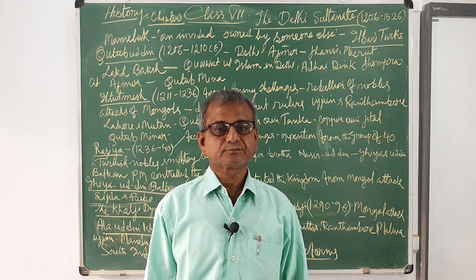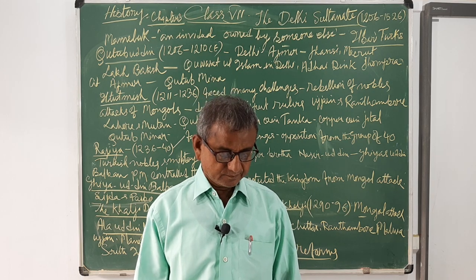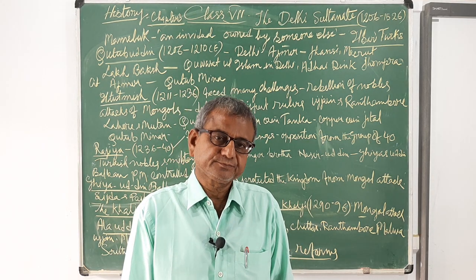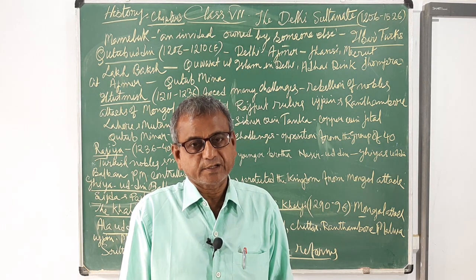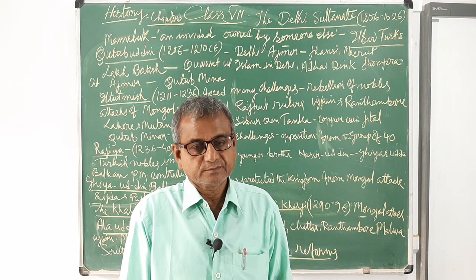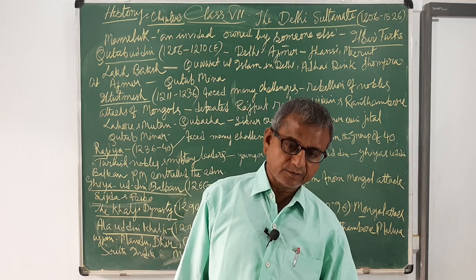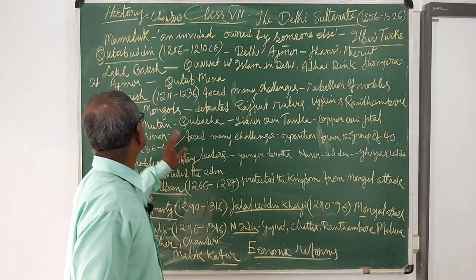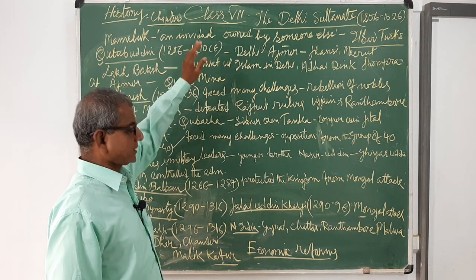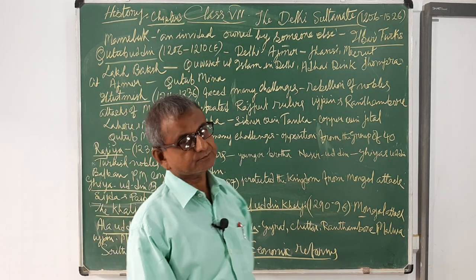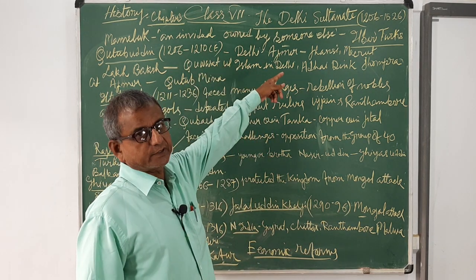Muhammad Ghori placed his own slave, Qutbuddin Aibak, on the throne of Delhi. After defeating Prithviraj Chauhan, he captured Delhi and placed his most favorite slave, Qutbuddin Aibak, on the throne. Qutbuddin Aibak ruled from 1206 to 1210. Thus the Slave Sultanate rule began in India.